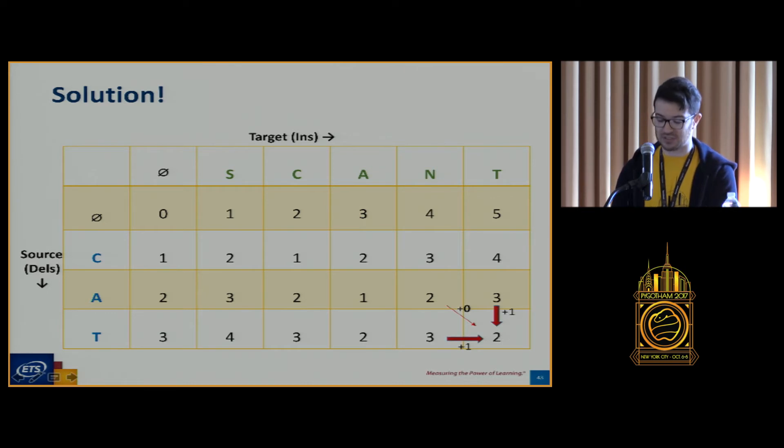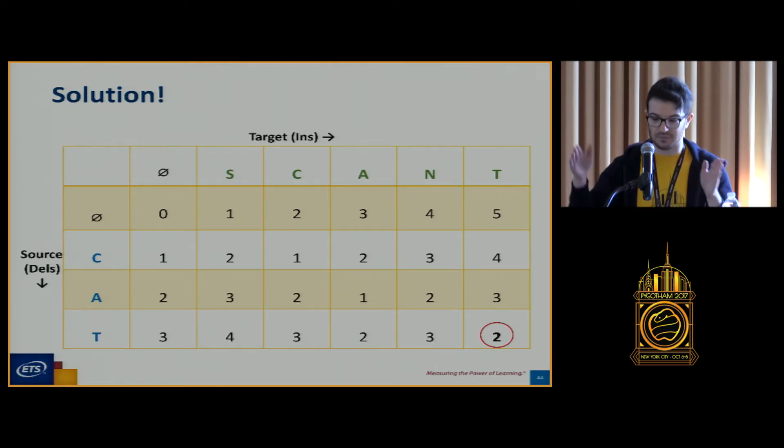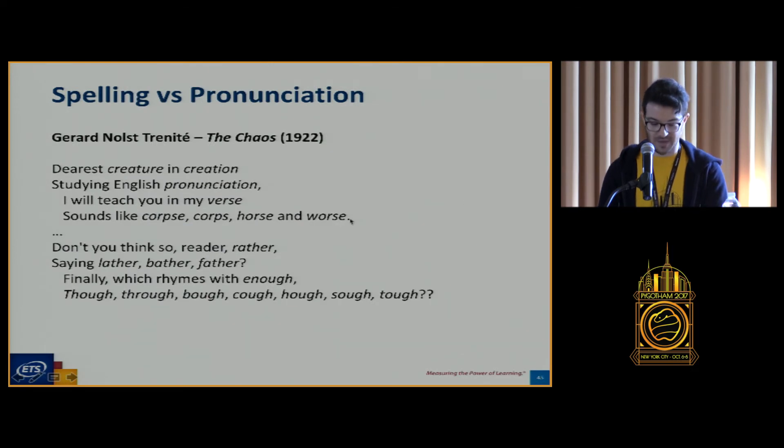And we get our expected cost at the end, right? We said that this should be a cost of two, because we're really only inserting the S and the N, and we go from CAT to SCANT, getting us exactly the cost that we want, without having to do any kind of crazy alignment and looking ahead. We break it up into sub-problems of the sub-strings, and once we get the cost of each of those, they're remembered in our grid, and we only have to look back at those.